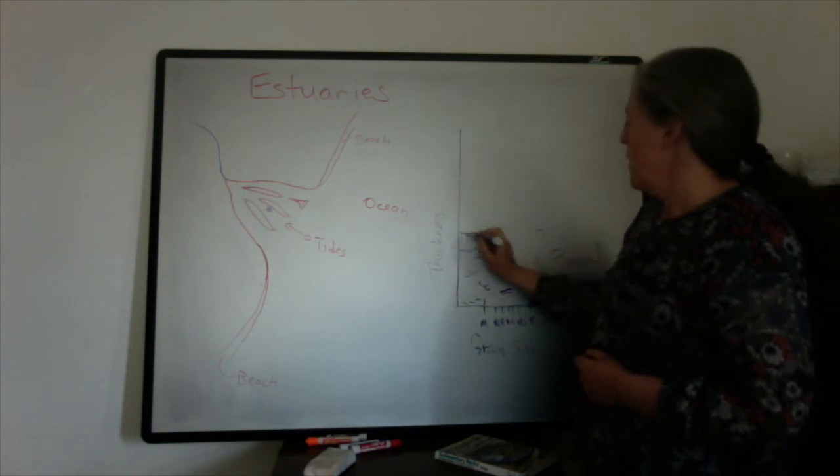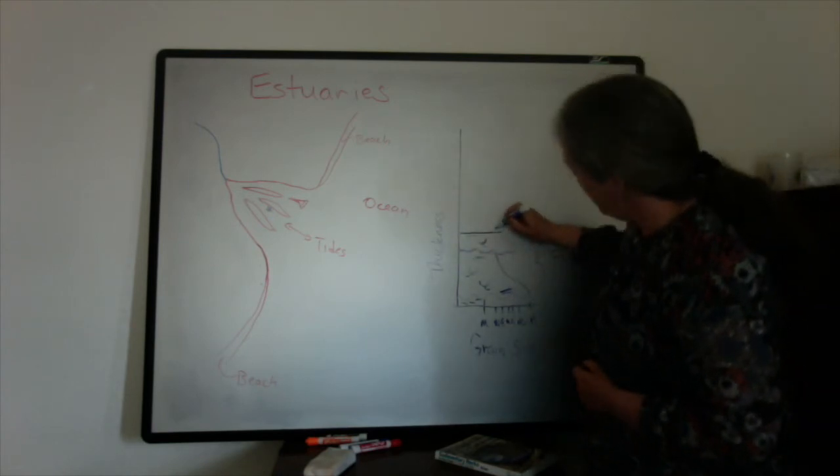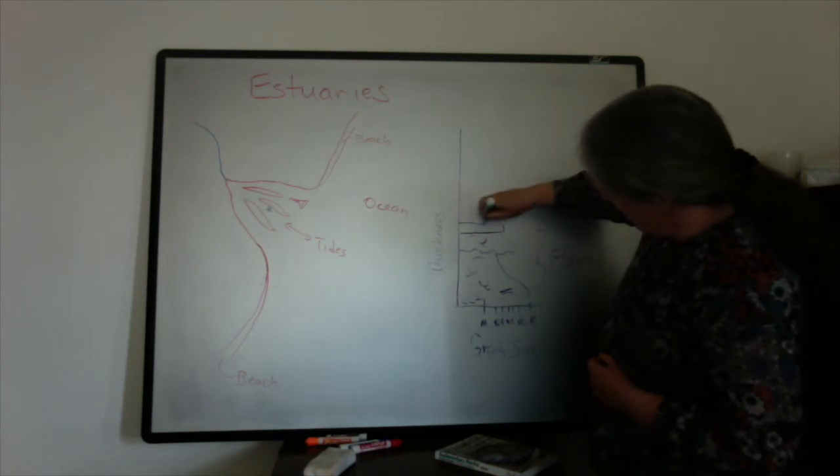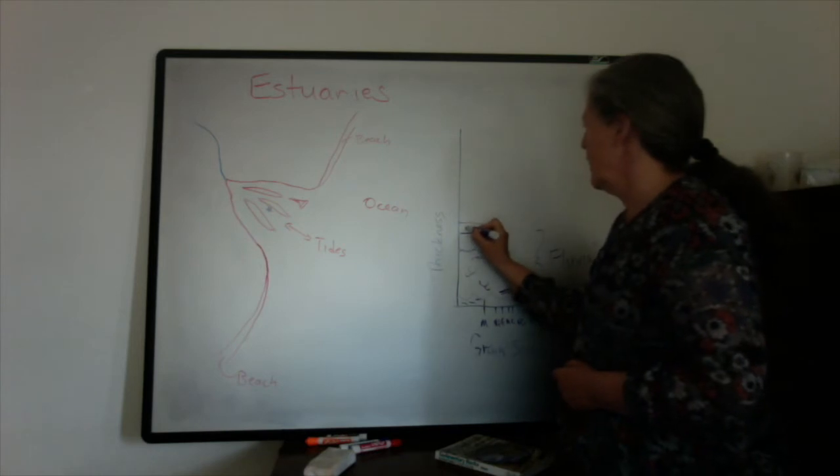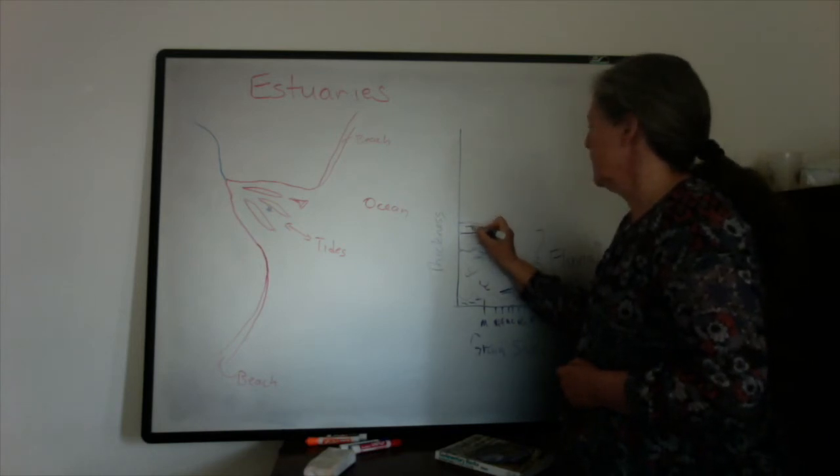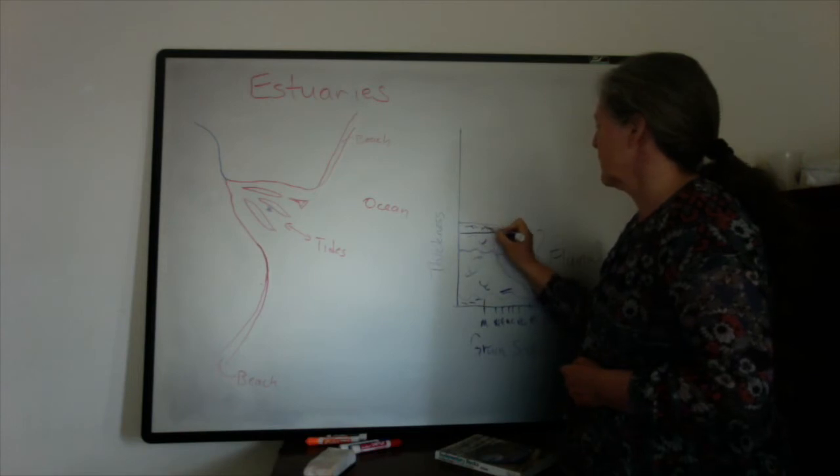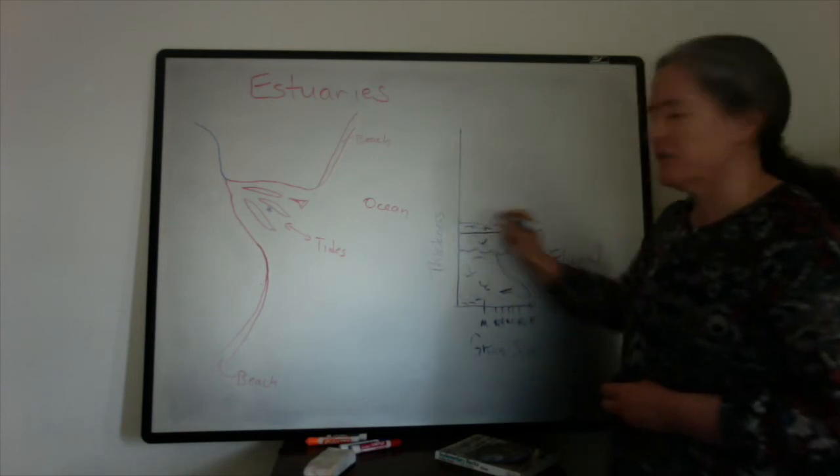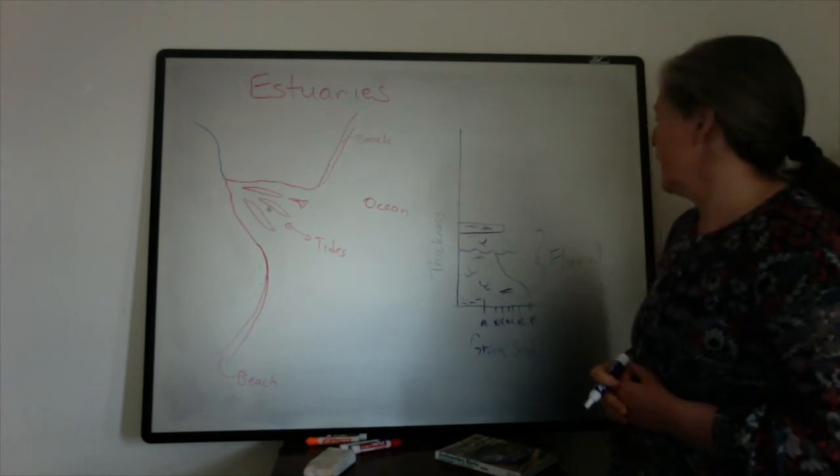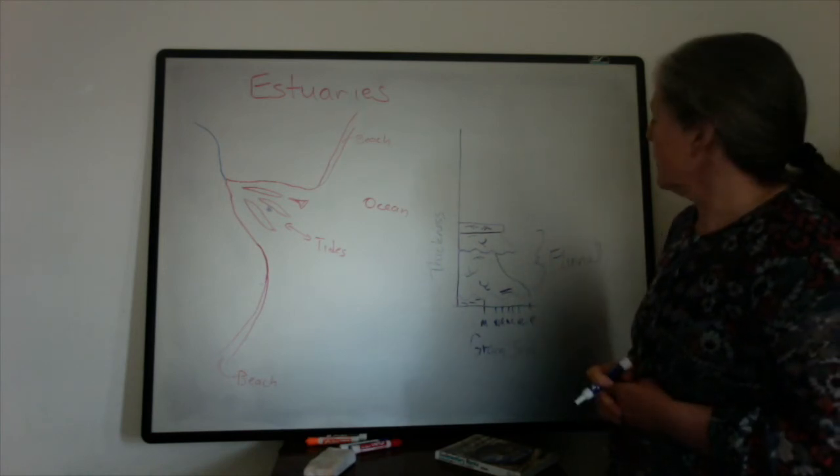And so as the sea level goes up, maybe you end up reworking some of those sandstones. And you see the two directions of flow. So I'm going to draw my current ripples showing opposite directions of flow here, which will be a shorthand for herringbone cross stratification.